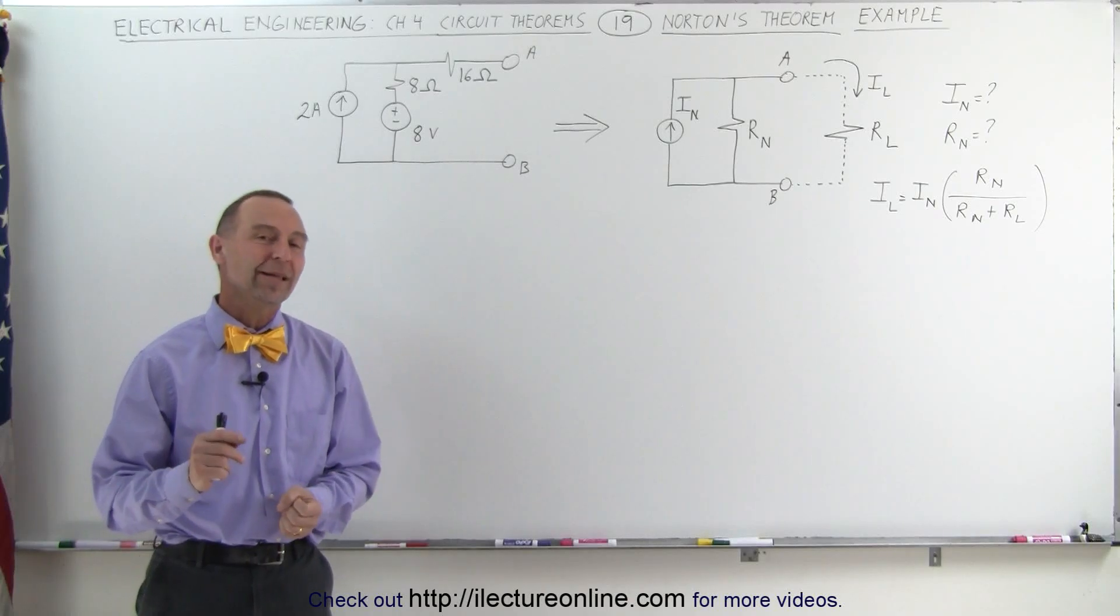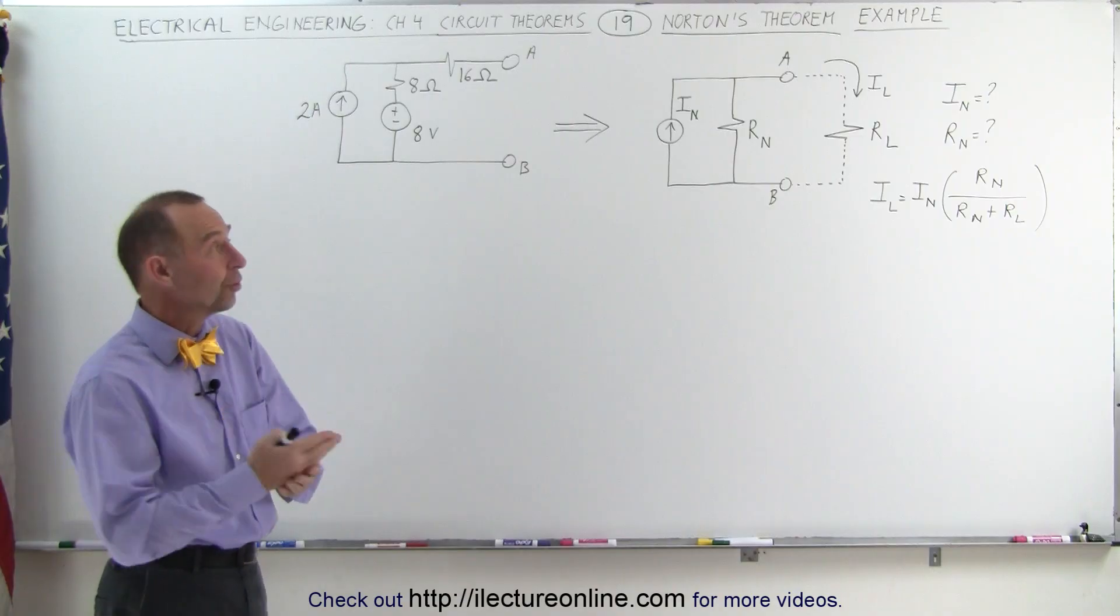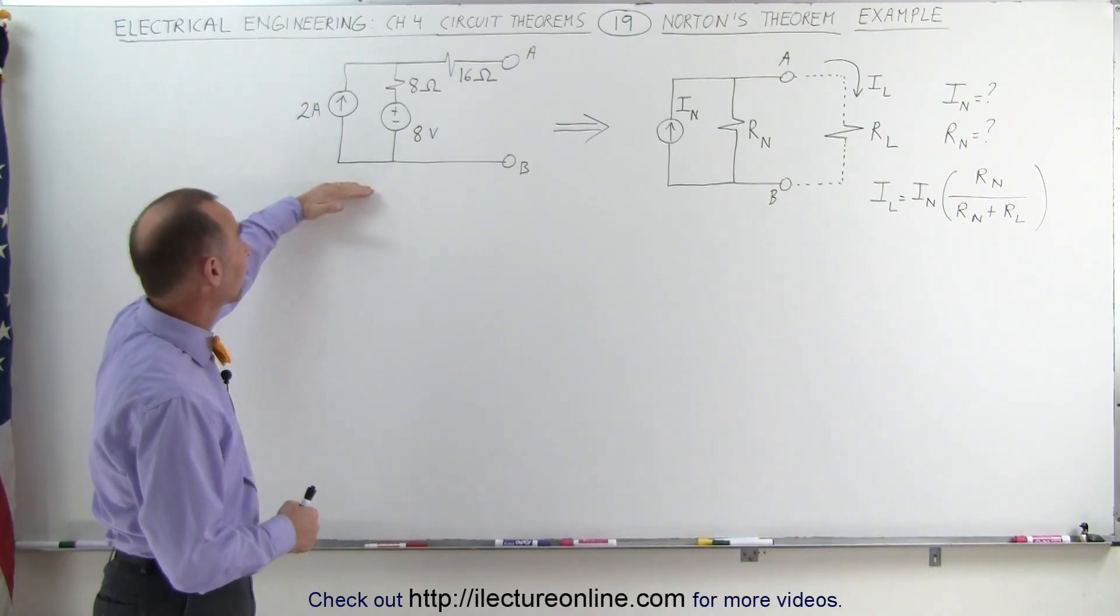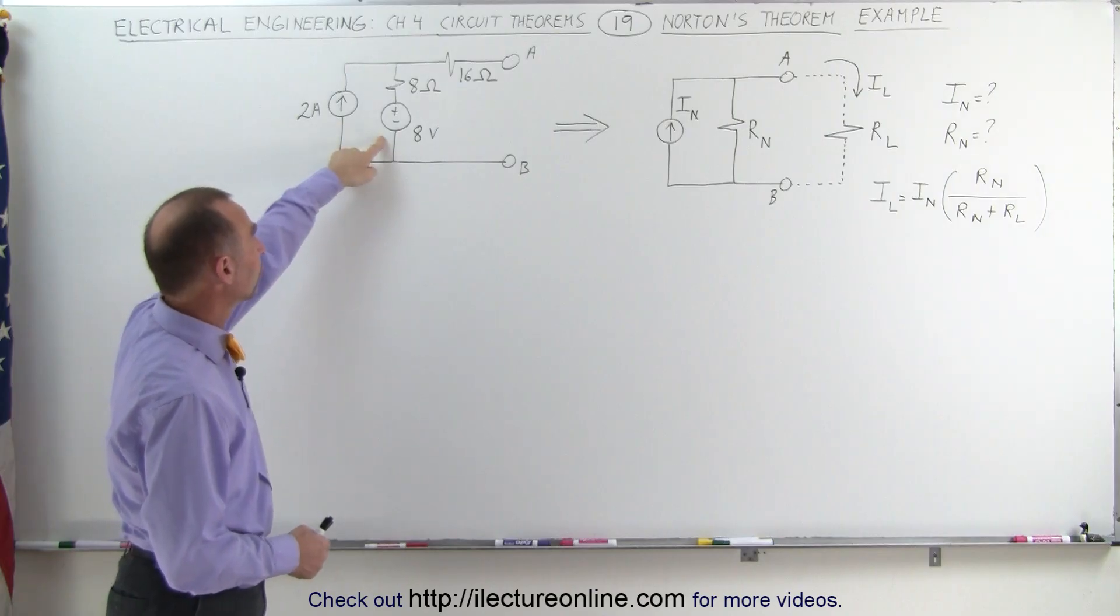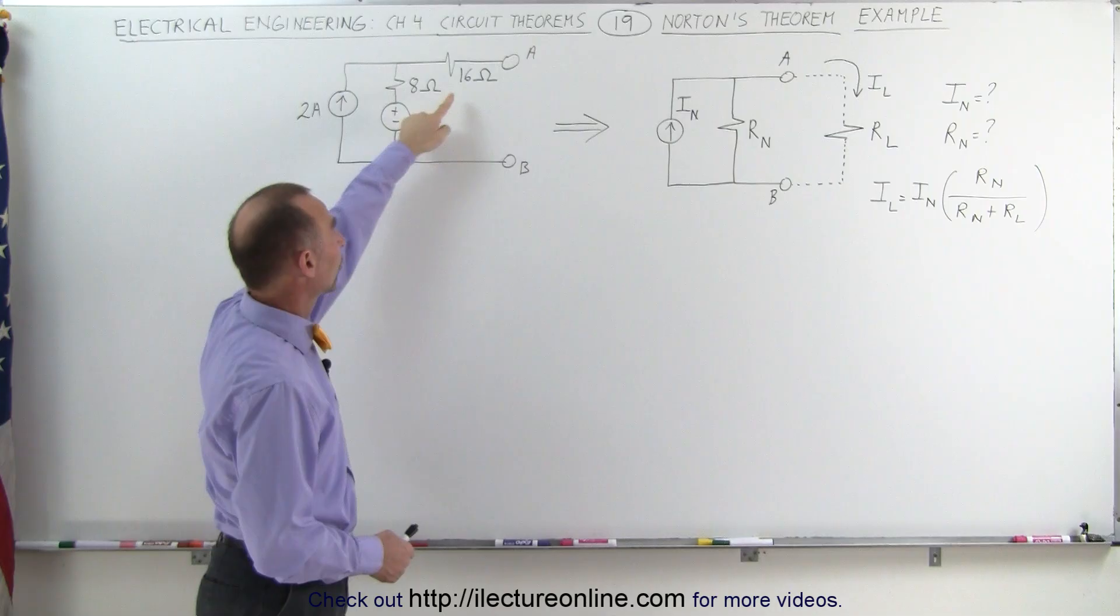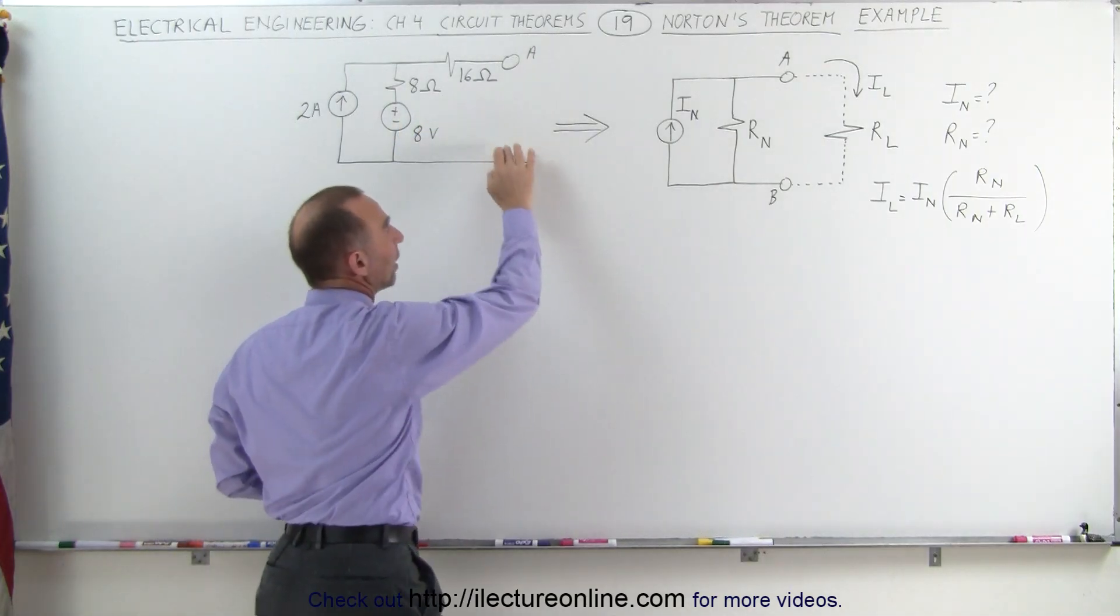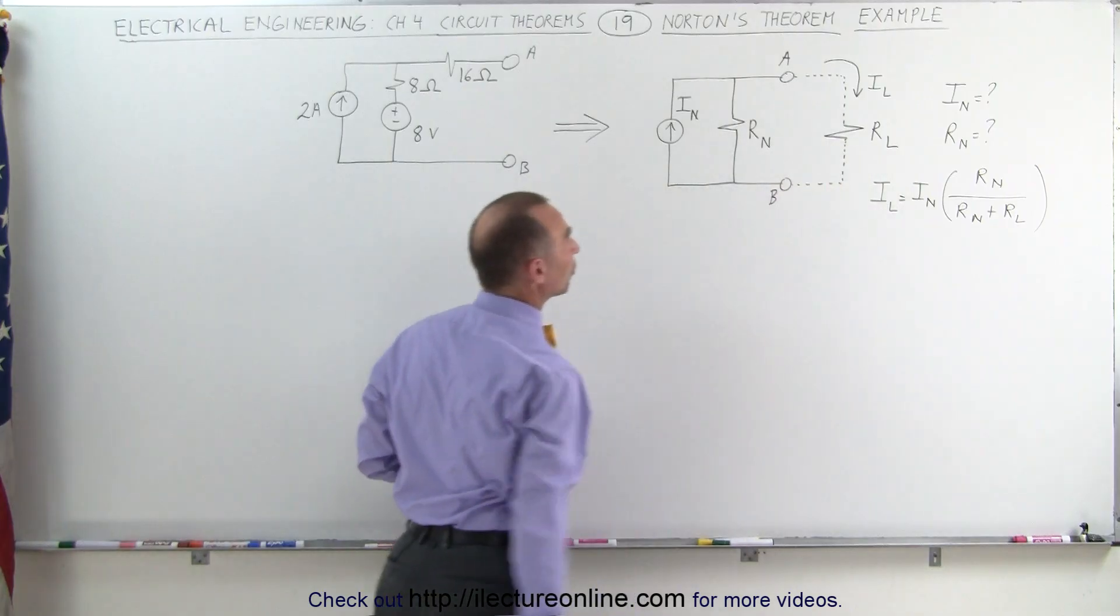Welcome to ElectronLine. Now let's do an example of how to calculate or how to find the Norton equivalent circuit of this particular example here. We have a 2 amp source, an 8 volt voltage source, an 8 ohm resistor in series with the voltage source and another 16 ohm resistor and then we have terminals A and B to which we're going to connect some load resistor.